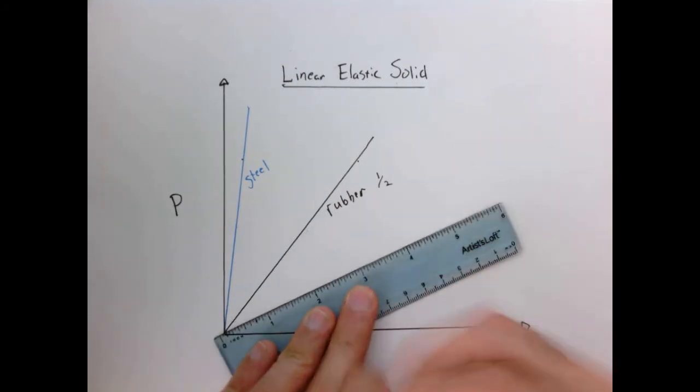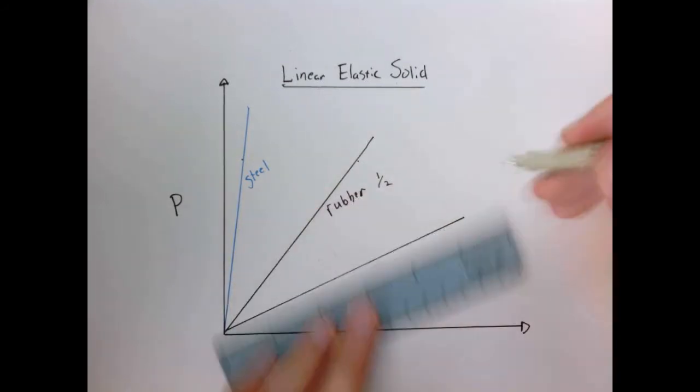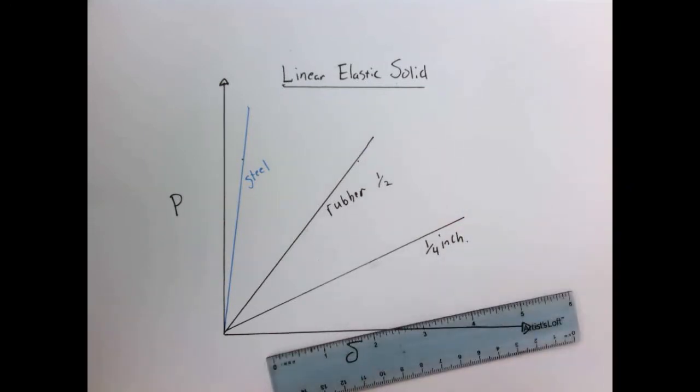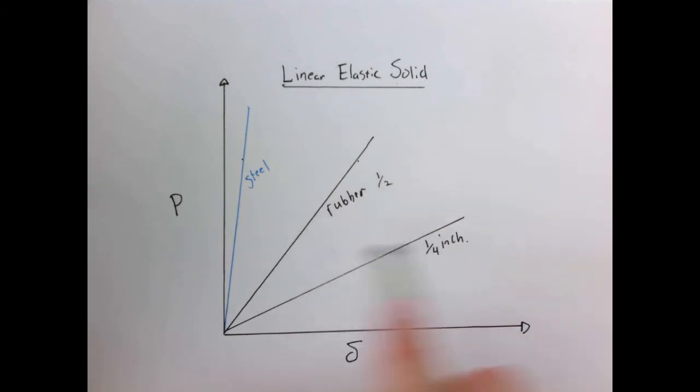So for a quarter inch rubber maybe I get something that looks like that. And if we want to think about what the difference is between the slope for a different cross-sectional area, that's quite easy to think about.